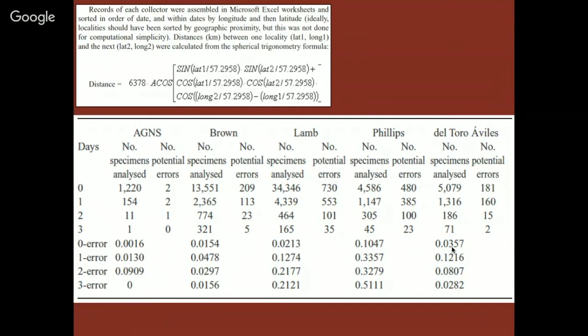For Brown and Lamb, errors appear to be random — carelessness when managing large numbers of records. Del Toro Áviles was discovered by Alan Phillips to have stopped labeling specimens late in his life, labeling them only when selling to a museum, so many specimens have essentially random dates if not localities. Phillips himself has much higher error rates — possibly because he put specimens collected by his team under his name, or also because it's fairly well known he was relabeling specimens from Mexican museums when they were of particularly interesting taxa, which constitutes some rather serious sins.